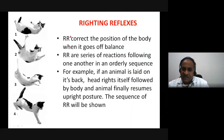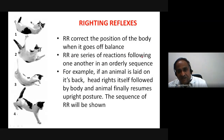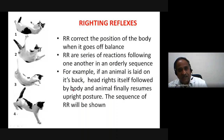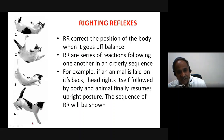To summarize: righting reflexes correct the position of the body when it goes off balance. They are a series of reactions following one another in an orderly sequence. For example, if an animal is laid on its back, the head rights itself first, followed by the body, and the animal finally resumes an upright posture ready to land or run.